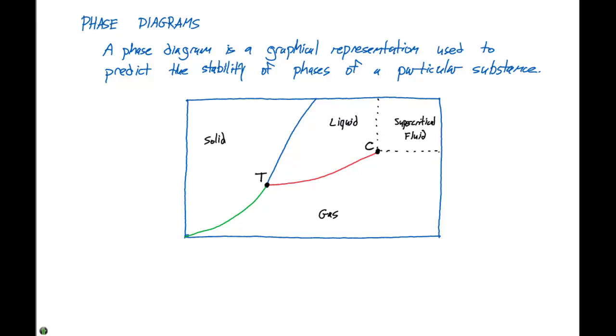This is kind of a busy figure, so let's go through some of the various points here. The first thing I want to draw attention to is this red curve. The red curve is called the vapor pressure curve, which represents the equilibrium between the liquid and the gas phase.